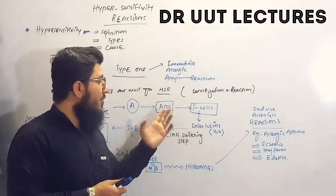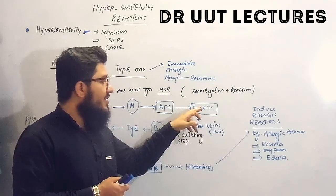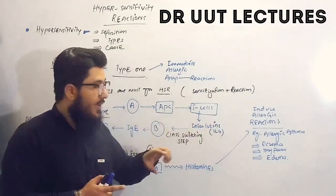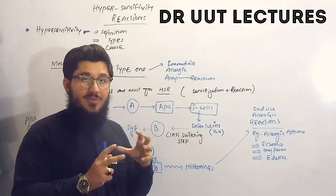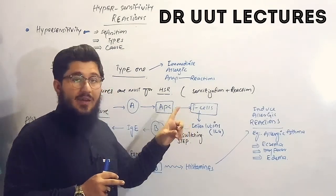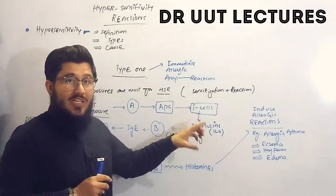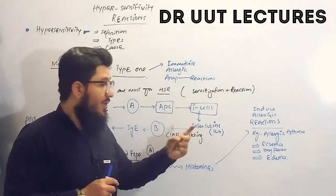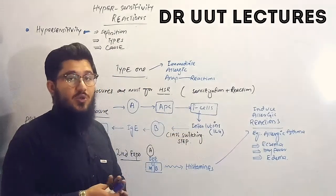Those other cells are T cells, which are waiting for the antigen presenting cells. When the APC reaches the T cells, the T cells release Interleukin-4 (IL-4). Among the many cytokines and interleukins available, IL-4 is the very prominent and responsible interleukin released by T cells.